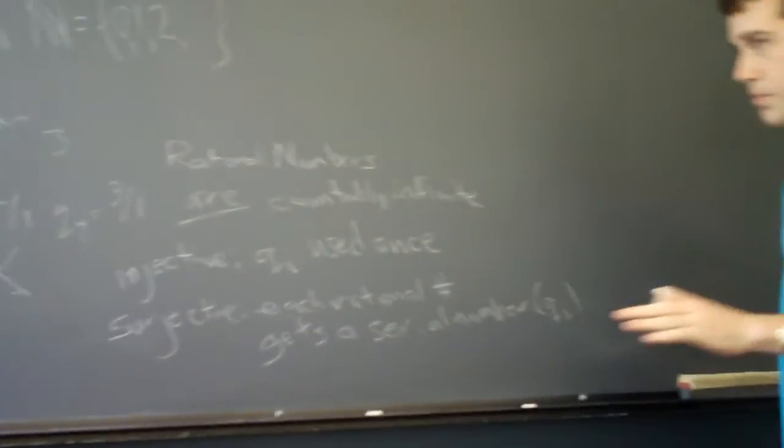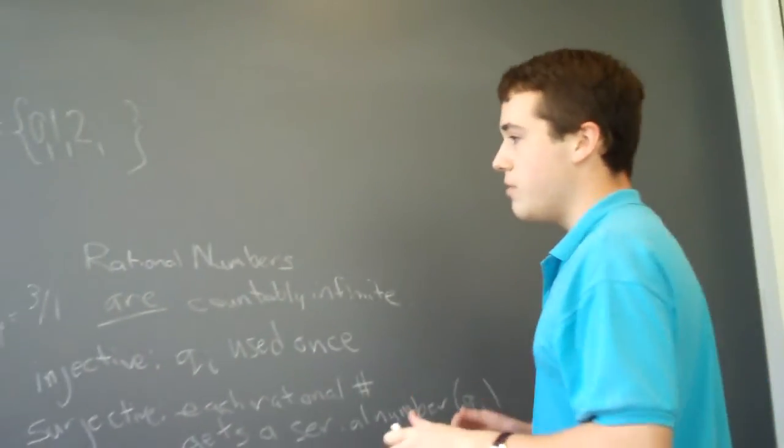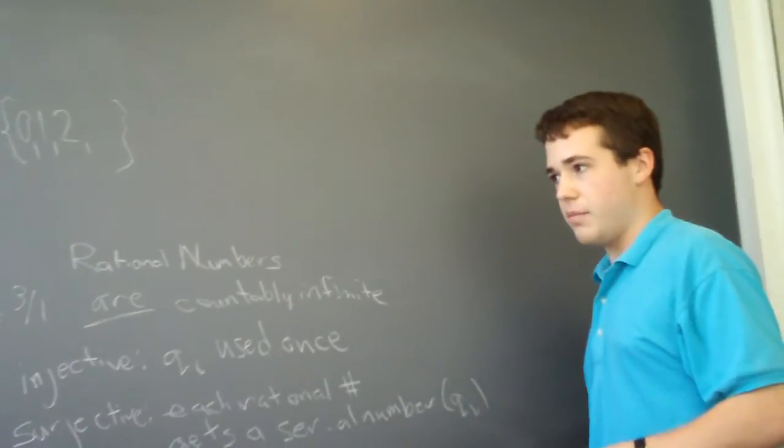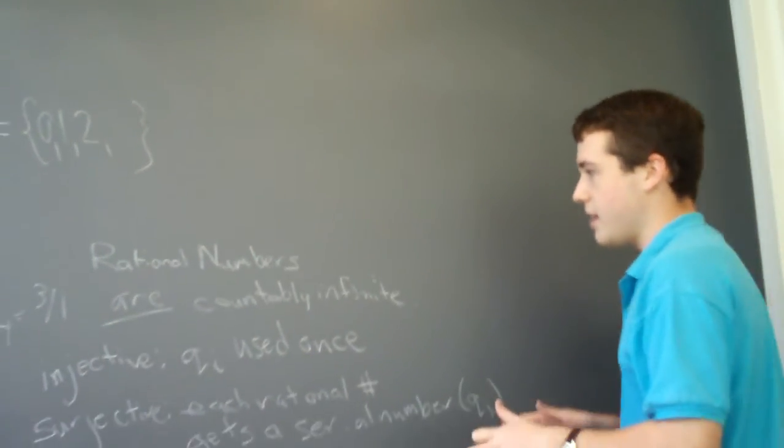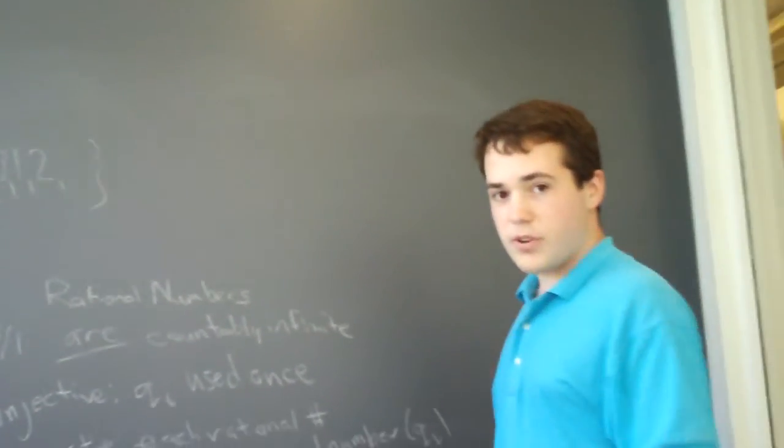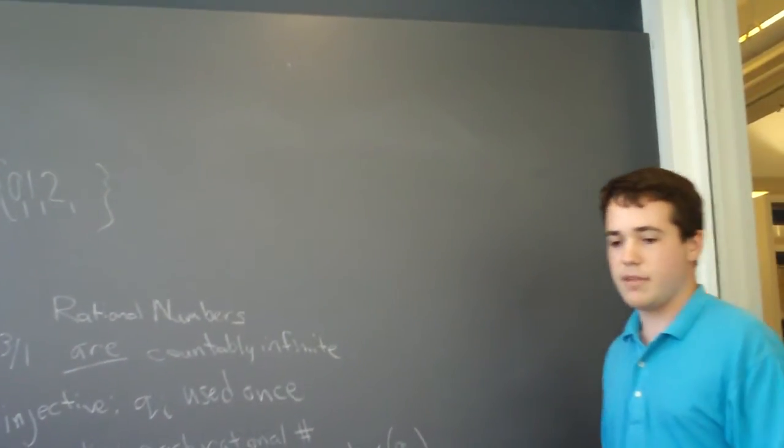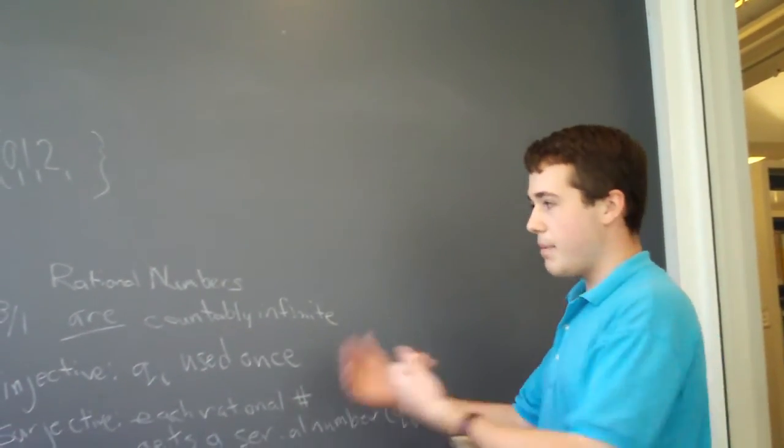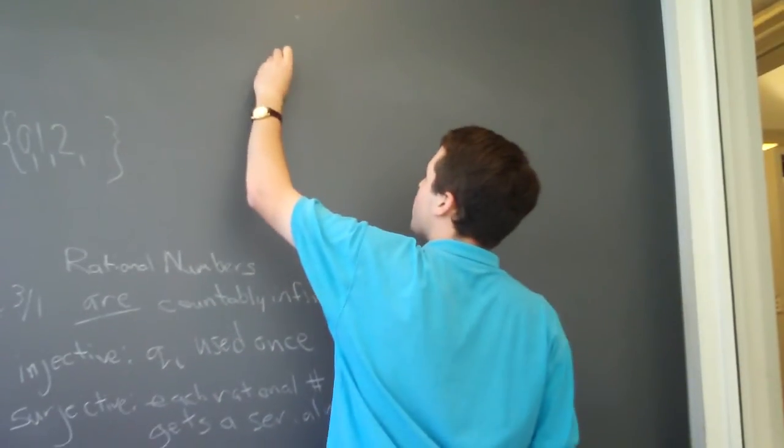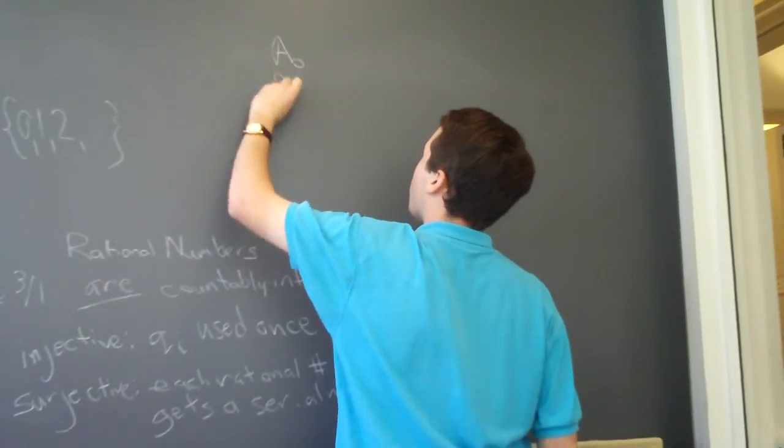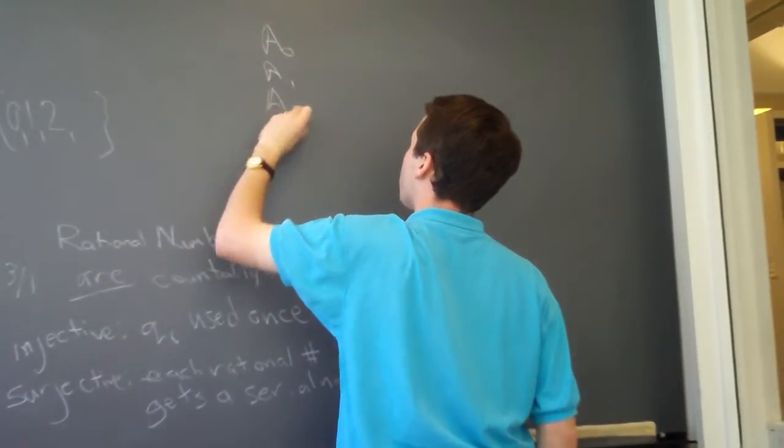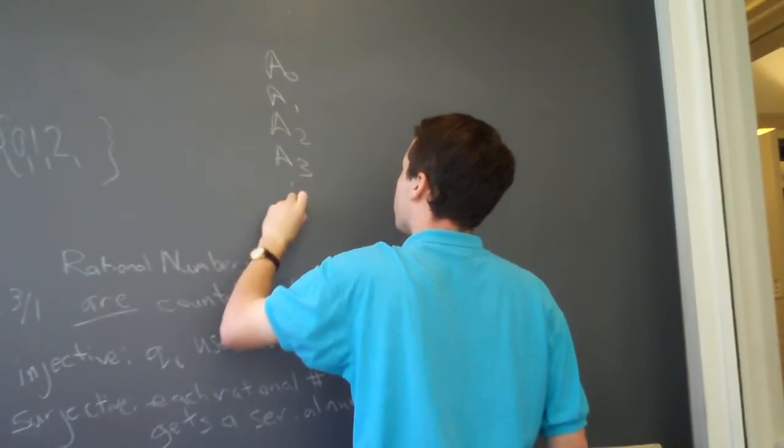Part 3 of this proof is to prove that the real numbers are uncountably infinite. They are not like the rational numbers. So, in order to do this, we will assume that they are countably infinite, and that we've already created a mapping such as this one, in which we have A0, A1, A2, A3, and so on.